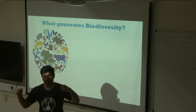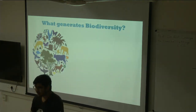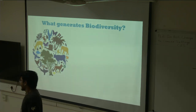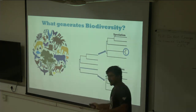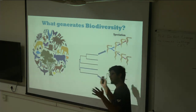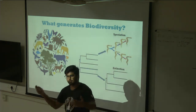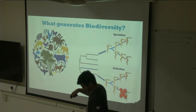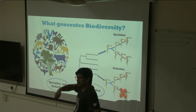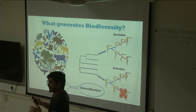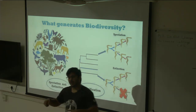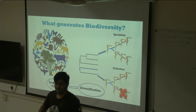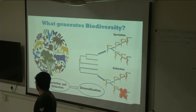One of the most important questions in evolutionary biology is what generates and maintains biodiversity. There are two fundamental processes: one is speciation, the formation of new species from an ancestral population, and the other is extinction, the removal of species from the tree of life. These two processes together are what we call diversification, which gives the total number of species at any given time point.